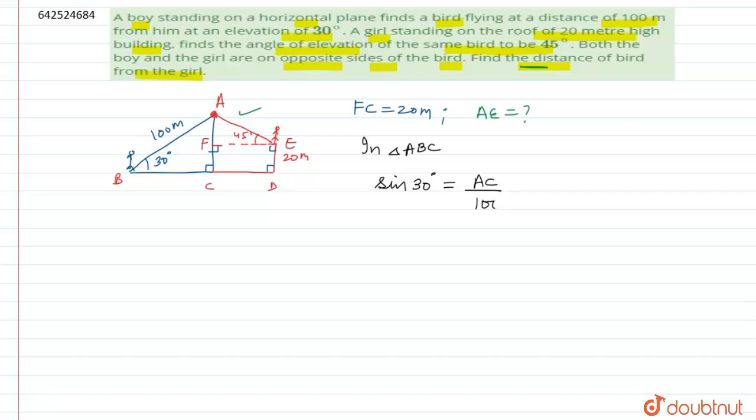So the perpendicular here will be AC upon hypotenuse will be AB, which is given to us as 100. So sine 30 will be equal to 1 by 2, that will be equal to AC upon 100. So now AC will be equal to 50 meters. So we have calculated AC as 50 meters.